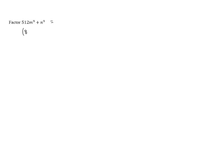512 is 8 cubed and m to the ninth is m cubed cubed. And then n to the ninth is n cubed cubed. So we can use the formula for the sum of two cubes to factor this.